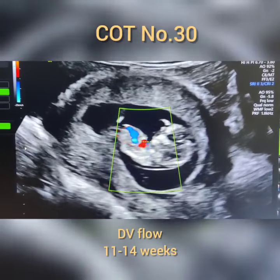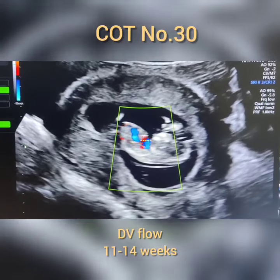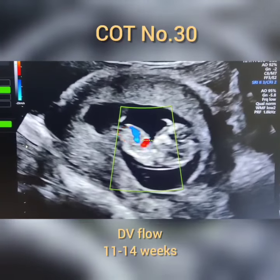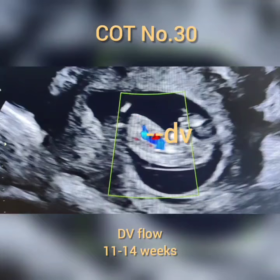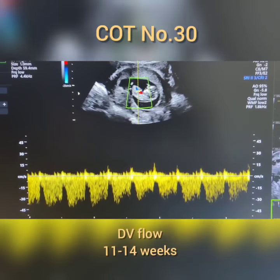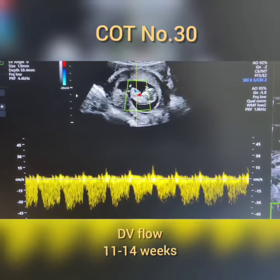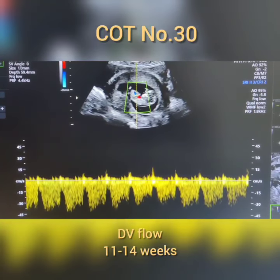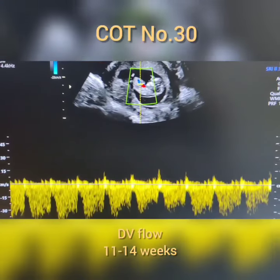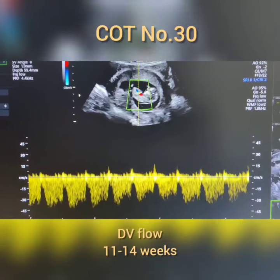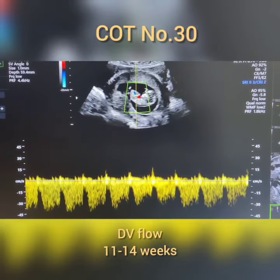Put the Doppler on that white color aliasing artifact — that's the DV flow. Apply the pulse wave Doppler and you get the DV flow pulse pattern. This is called the spectral pattern of the DV, showing the S, D, and A waves.